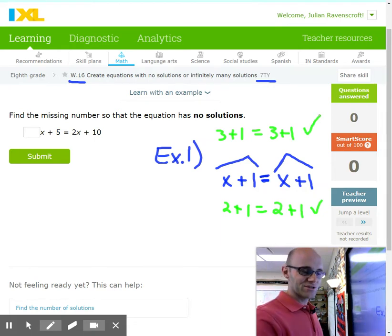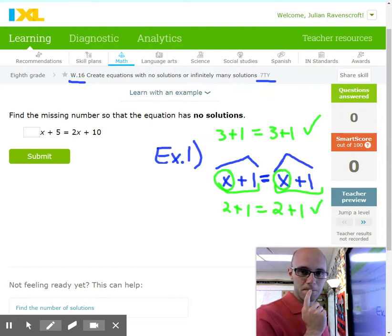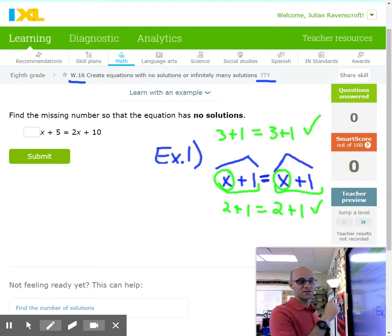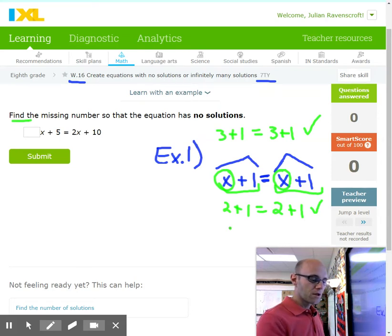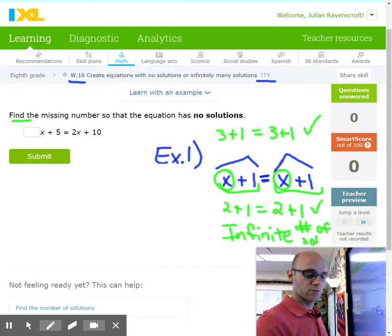How about three plus one? If we plug in a three for X, will that make a true statement? That's also true. You might be noticing something here. Because the two sides of the equation look identical, how many numbers do you think will work for X? It actually would be any number you plug in for X. As long as you plug in the same thing on both sides for X, it's going to be a solution to this. So this is what we call having an infinite number of solutions.